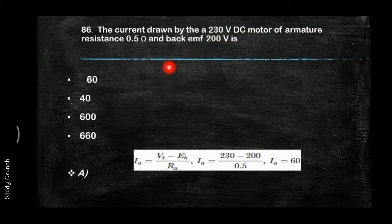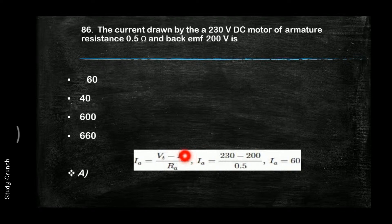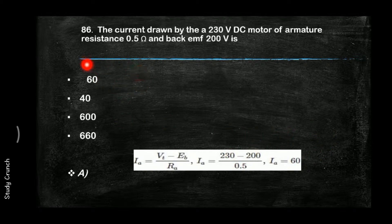The current drawn by a 230 V DC motor with armature resistance 0.5 Ω and back EMF 200 V: IA = (VT − EB) / RA = (230 − 200) / 0.5, so the answer is 60 amperes.